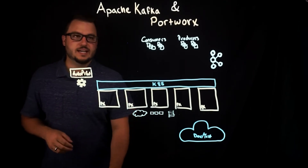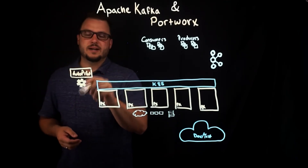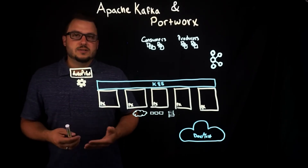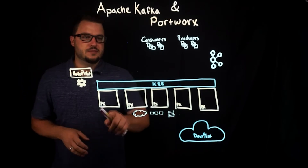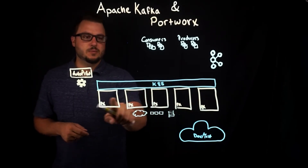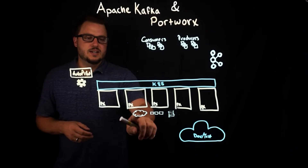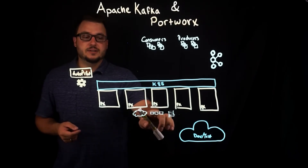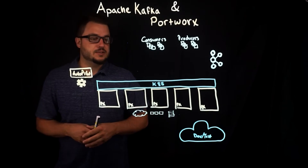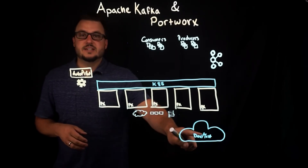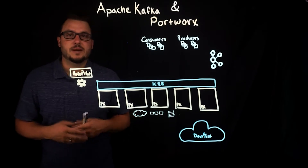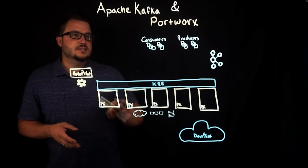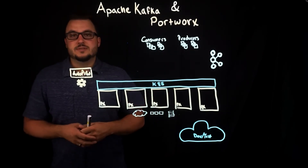I have a number of things already laid out here, such as Autopilot, which we'll talk about the benefit of using with Apache Kafka. We have a Kubernetes cluster with Portworx already installed across five nodes, indicating that Portworx can run pretty much anywhere — on the cloud, bare metal, or scale-out or scale-up storage. We also have a dev/test cluster, which will come into play for data mobility benefits, and some consumers and producers.